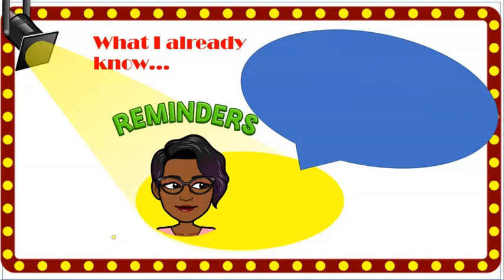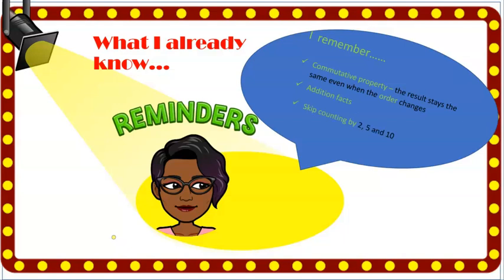We will review a few things that you need to keep in mind to help you in learning your multiplication and division facts. For instance, the commutative property — you've learned that before, and it simply means that regardless of the order, the result stays the same. Your addition facts will come in handy, as well as skip counting by twos, fives, and tens.